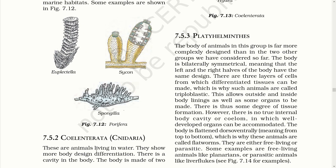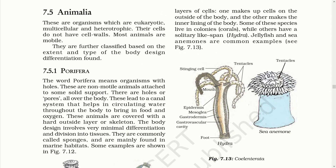Coelenterata. These are animals living in water. They show more body design differentiation. There is a cavity in the body. The body is made up of two layers of cells — one makes up the outside of the body and the other makes the inner lining. Some species live in colonies while others have a solitary lifespan. Hydra, jellyfish and sea anemones are common examples.